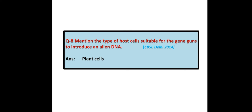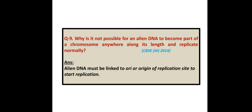Mention the type of host cells suitable for gene guns to introduce alien DNA. Answer: Plant cells. Next question: Why is it not possible for an alien DNA to become part of a chromosome anywhere along its length and replicate normally? Answer: Alien DNA must be linked to ori, or the origin of replication site, to start replication.